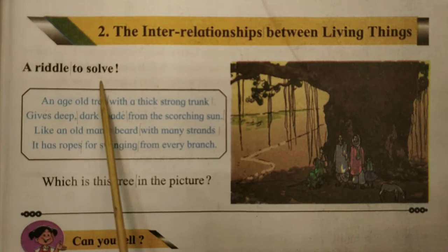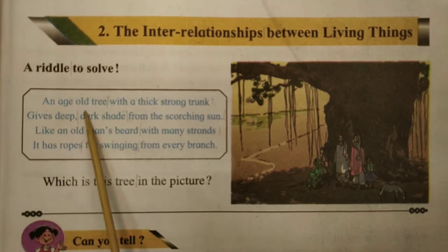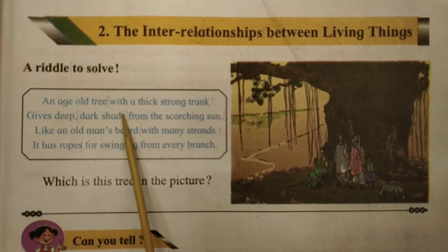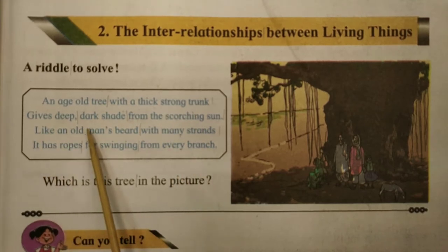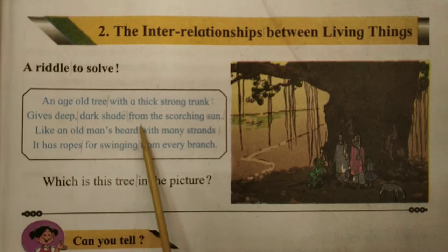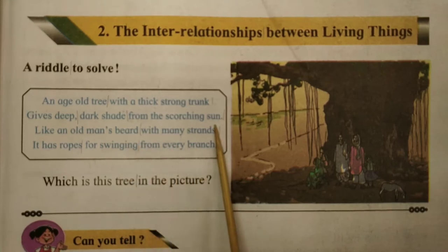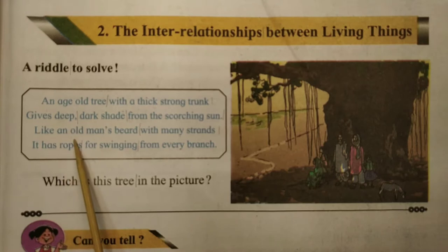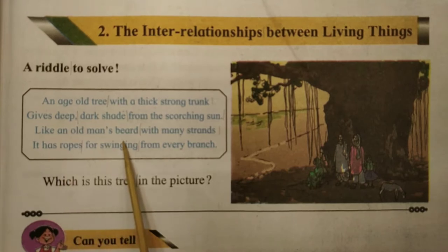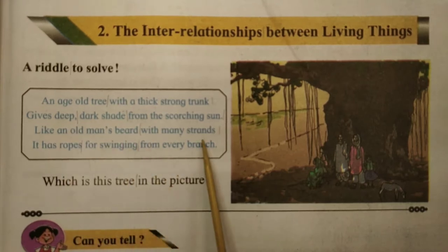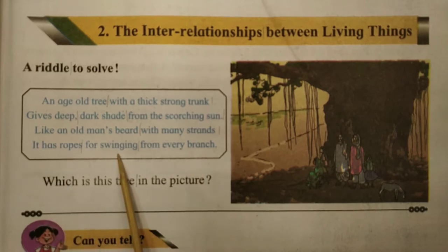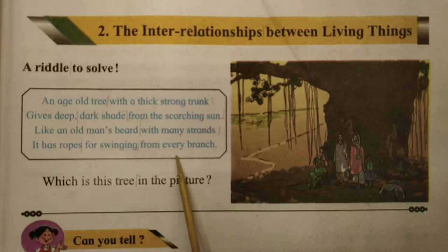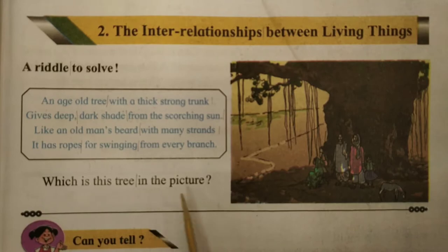A riddle to solve: an age-old tree with a thick strong trunk gives deep dark shade from the scorching sun. Like an old man's beard with many strands, it has ropes for swinging from every branch. Which is this tree in the picture?